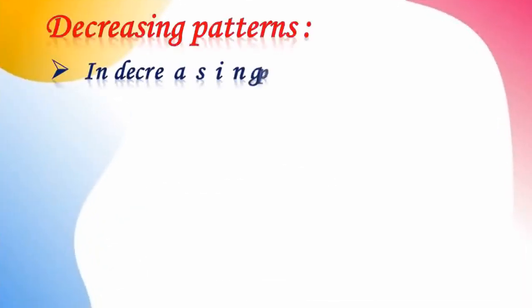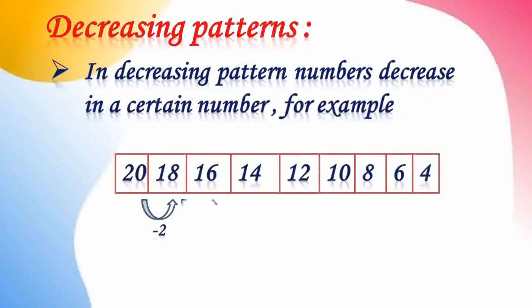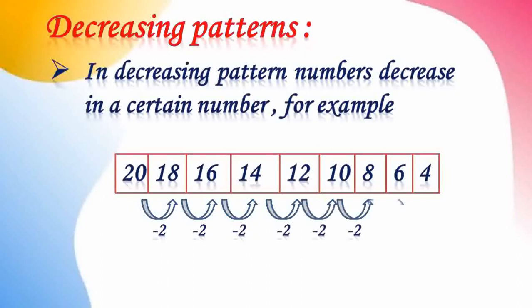Now we can see how a decreasing pattern occurs. The first number is 20, then 18, then 16, then 14. How does it come? When we subtract two from 20, we get 18. Subtract two from 18, we get 16. Subtract two from 16, we get 14. The number is decreasing — from a bigger number to a smaller number — but in a certain manner, decreasing by two. Decreasing pattern: numbers decrease by a certain fixed number.